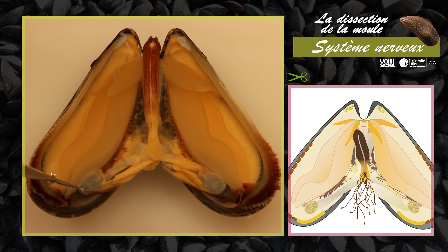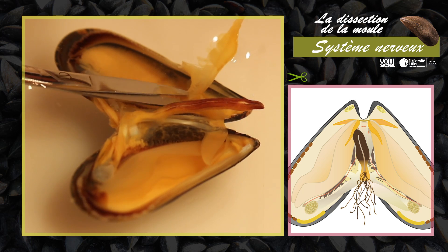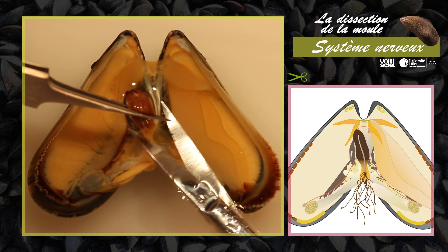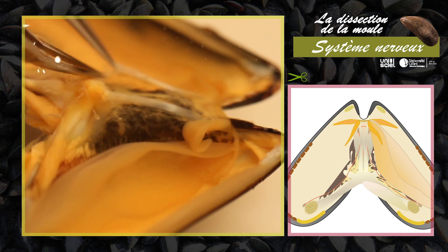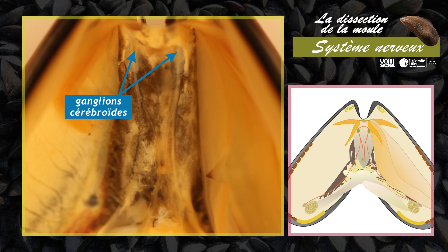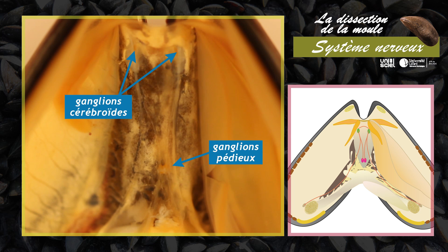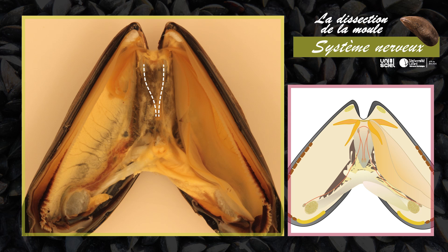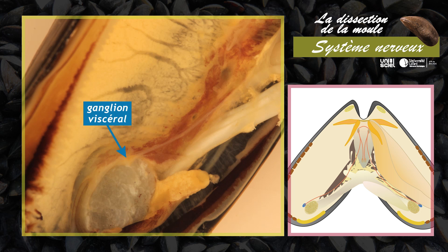Retirez d'abord la branchie droite, coupez le pied à sa base, ensuite soulevez et sectionnez les muscles du pied. Sont maintenant visibles les ganglions cérébroïdes situés de part et d'autre de la bouche ainsi que les ganglions pédieux. Dégagez délicatement les connectifs qui relient ces ganglions entre eux. Sont maintenant visibles les connectifs cérébro-pédieux ainsi que les connectifs cérébro-viscéraux. Les ganglions viscéraux sont visibles à proximité du muscle adducteur postérieur.